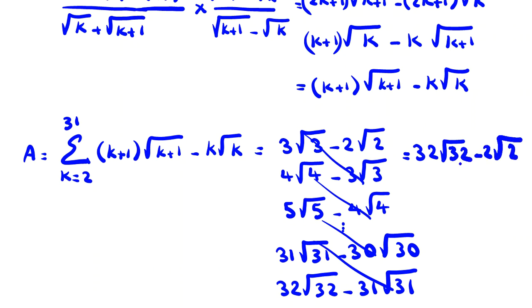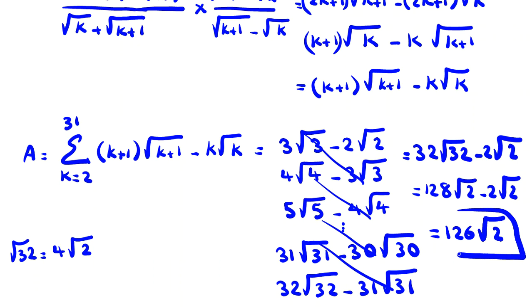It is 4 times root 2. 4 times 32 here is 128 root 2 minus 2 root 2, and it will be 126. 126 root 2. So we found the answer. It is equal to this.